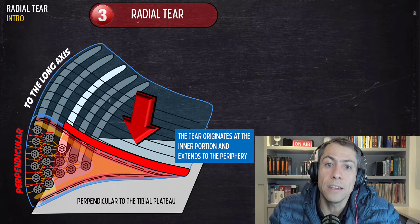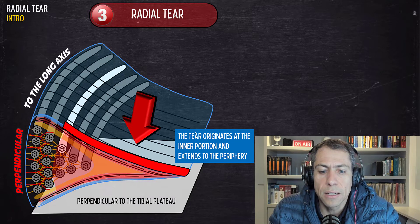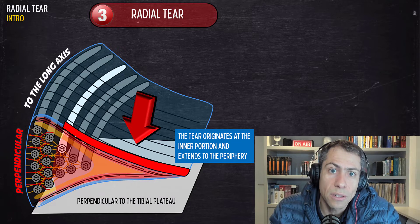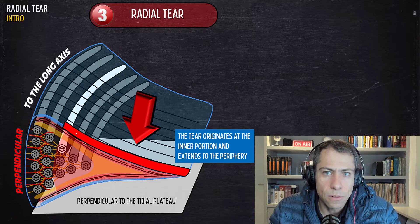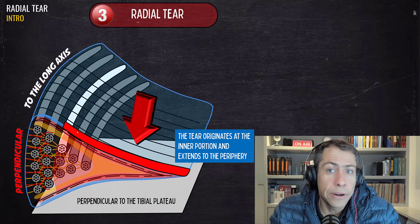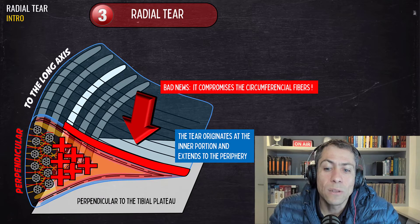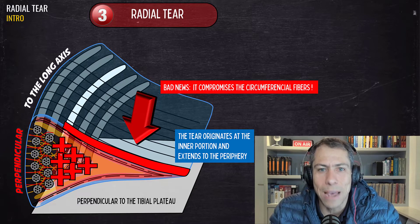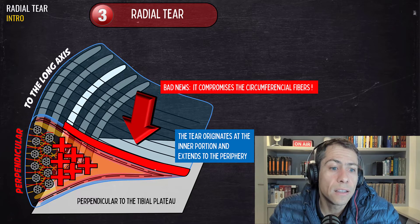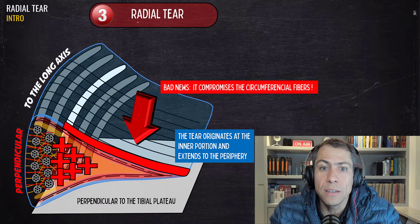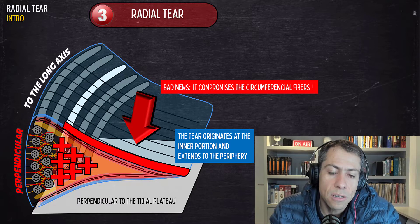The radial tear originates at the inner portion of the meniscus and extends to the periphery. The bad news is that it compromises the circumferential fibers, which is particularly damaging — especially when the tear is large enough, when it is a complete radial tear, or when it extends all the way to the periphery of the meniscus.